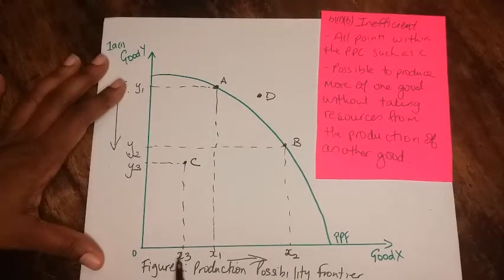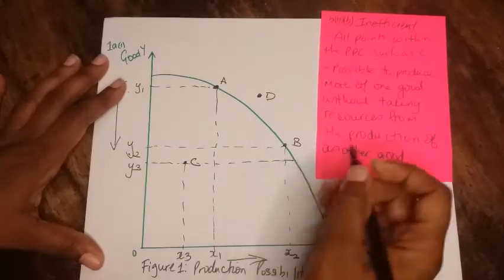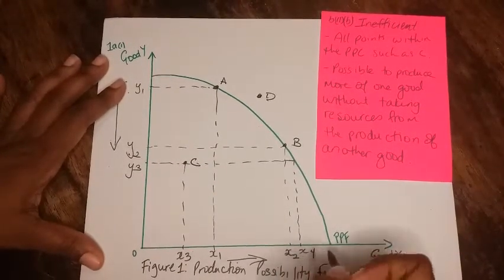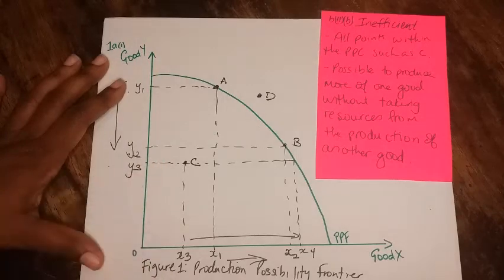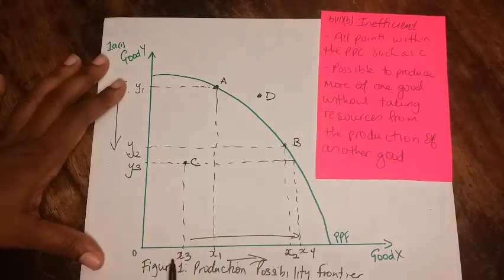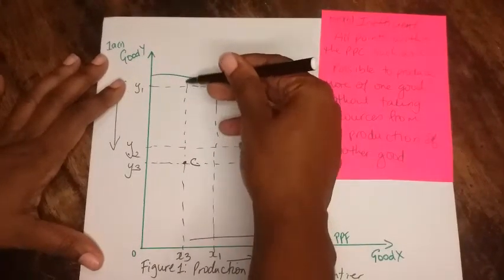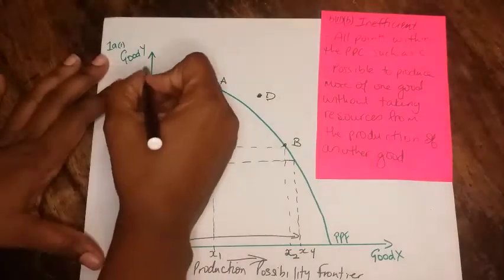It's possible if you wanted to get more good X - notice we can get more of good X. This will now become X4, so we can have this increase in good X without me having to give up any Y3. Likewise, assuming we were at the same X3, Y3, and instead of getting more X you want to get more Y, it's possible for me to get more Y to points such as Y4 and remain at X3.